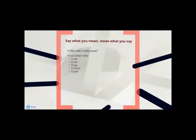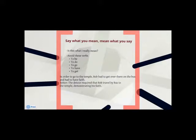Avoid the verbs to be, to do, to go, to have, and to get. These verbs are necessary at times, but often they fail to describe the true action. Consider this sentence: In order to go to the temple, Bob had to get over there on the bus and had to have faith. Now look at how much more descriptive verbs tightened the sentence. The detour required that Bob travel by bus to the temple, demonstrating his faith.